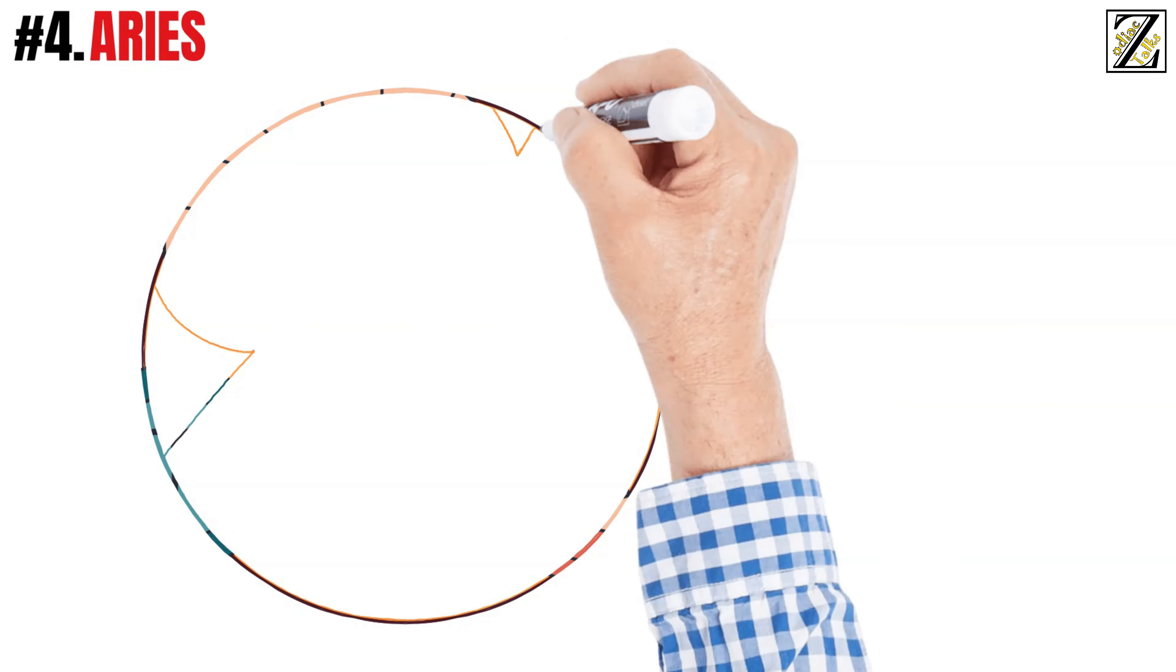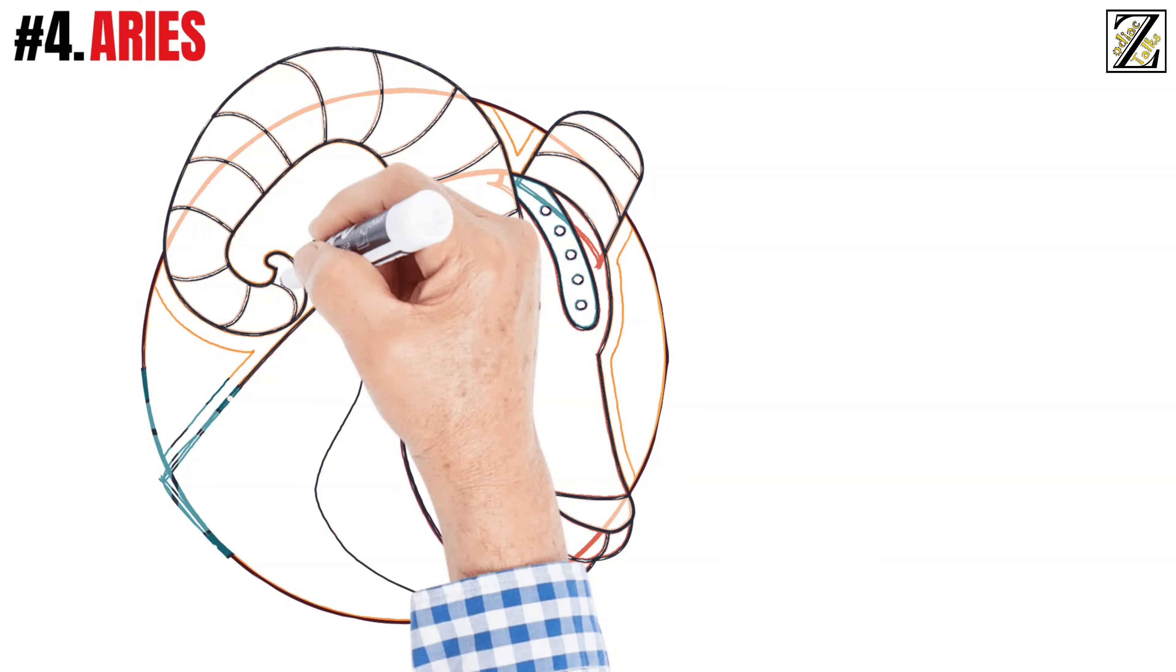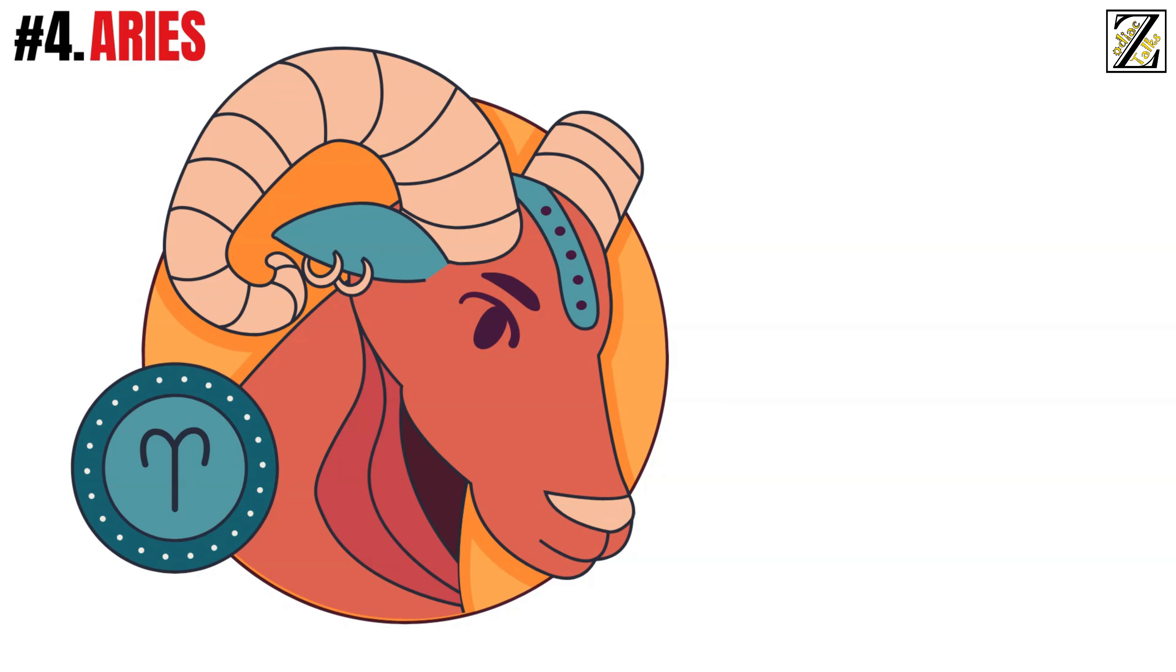Number four, Aries. Aries individuals live in the now, so they can't wait until they have good savings to start living their lives. Being fire signs, they're passionate, enthusiastic, anxious, and quick to lose their patience.